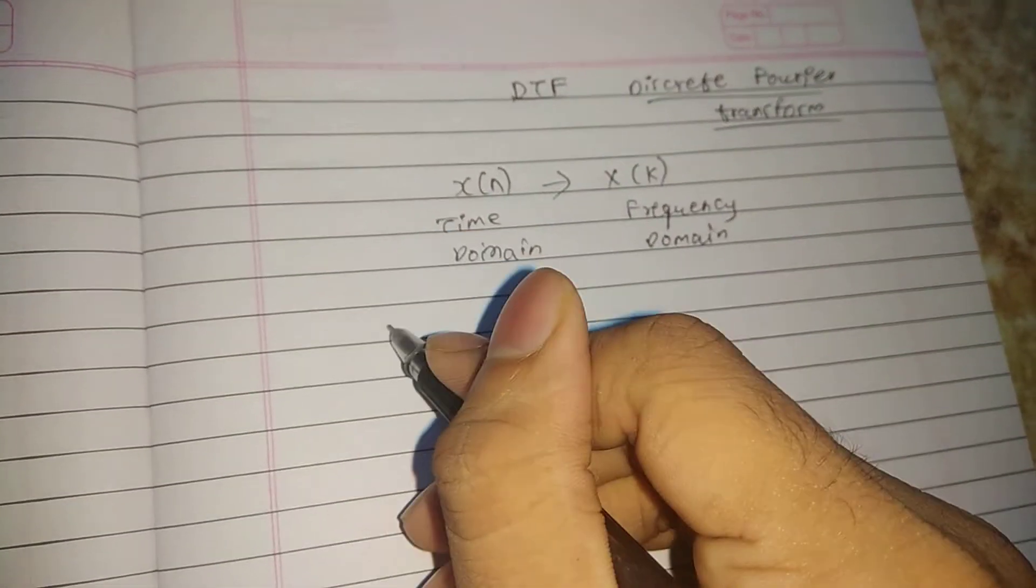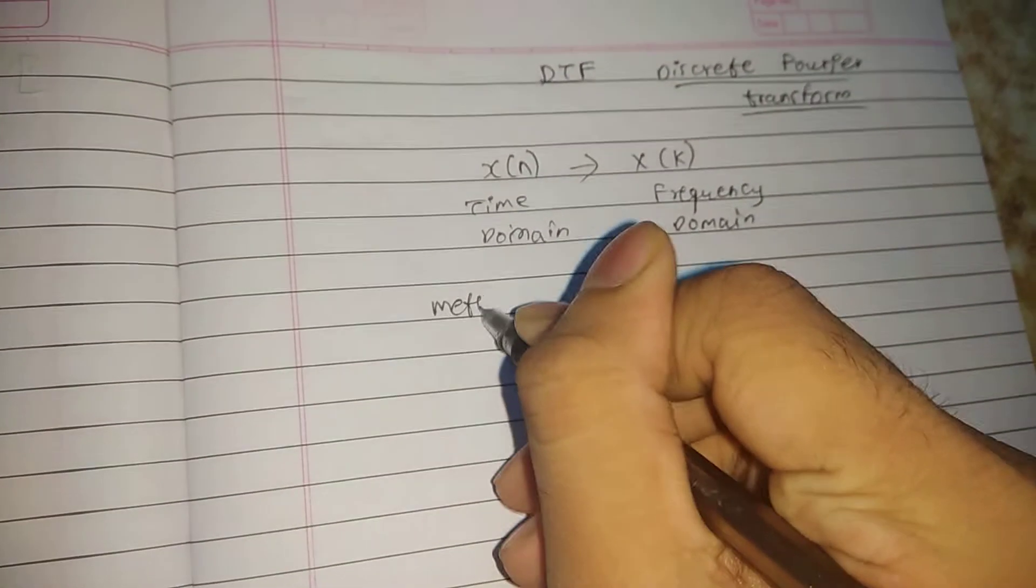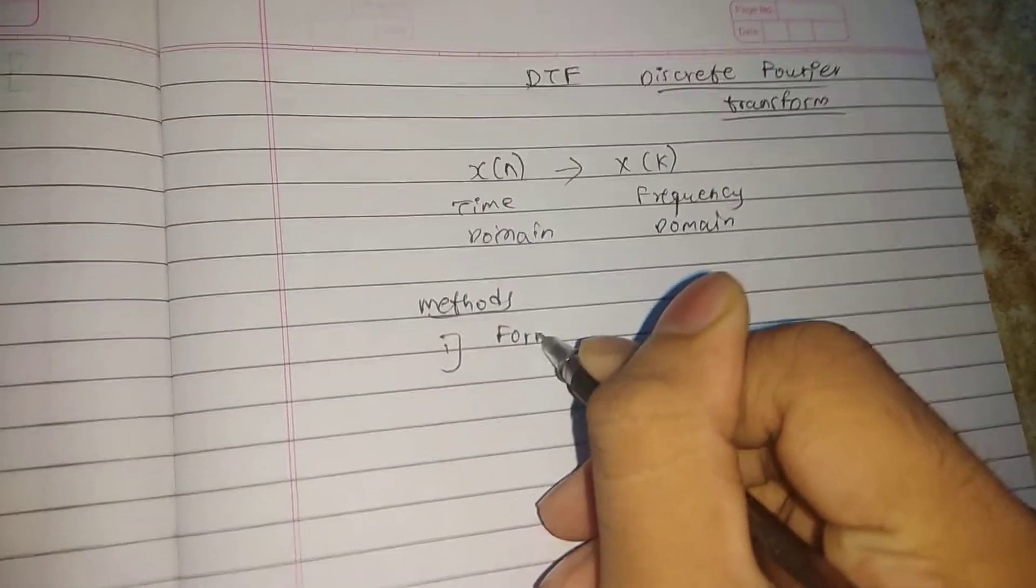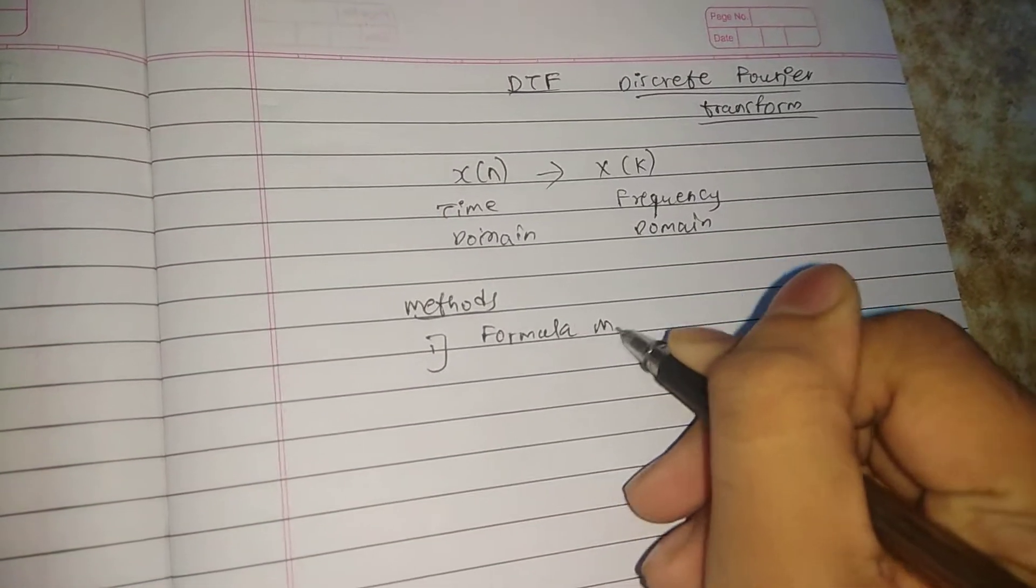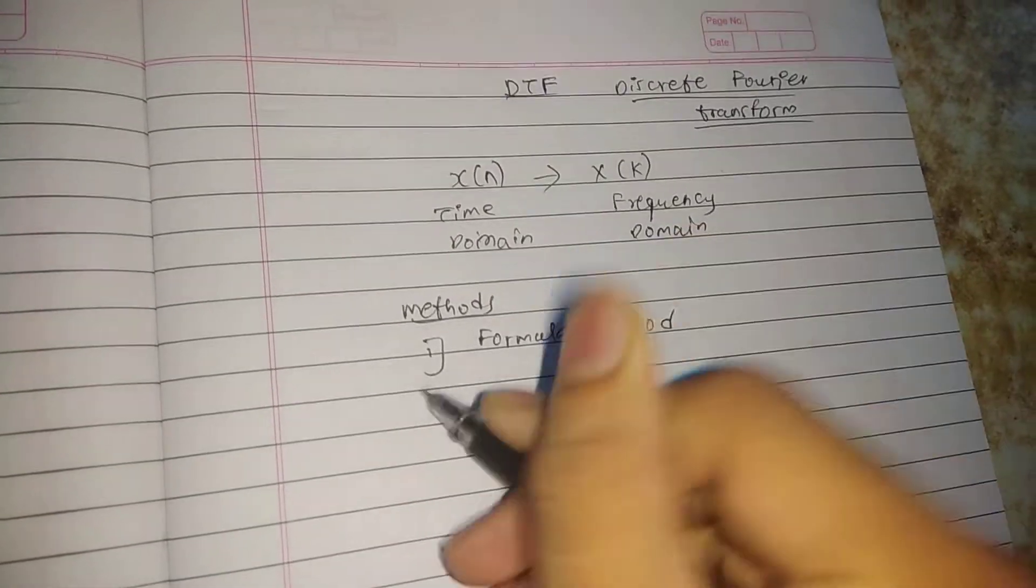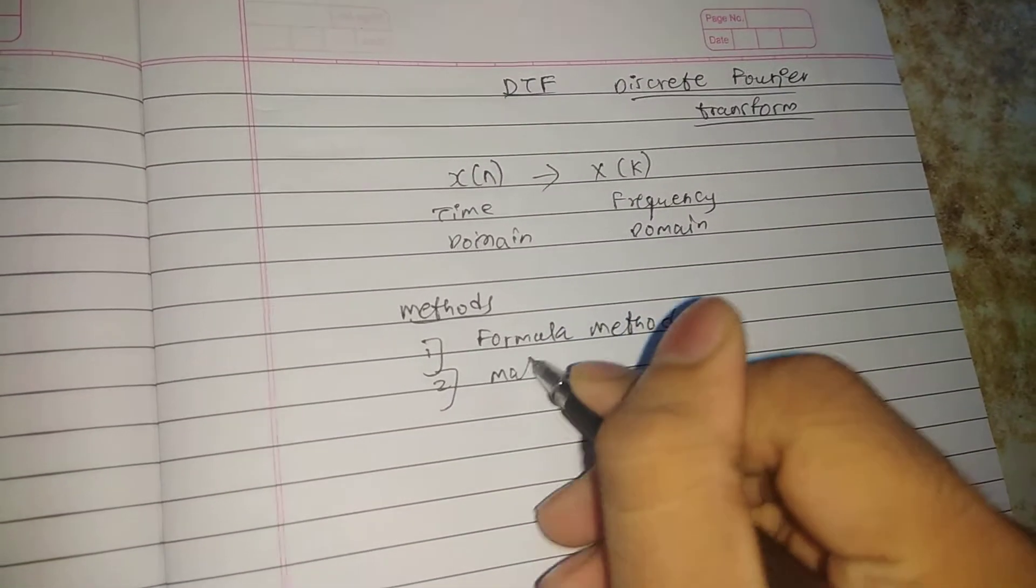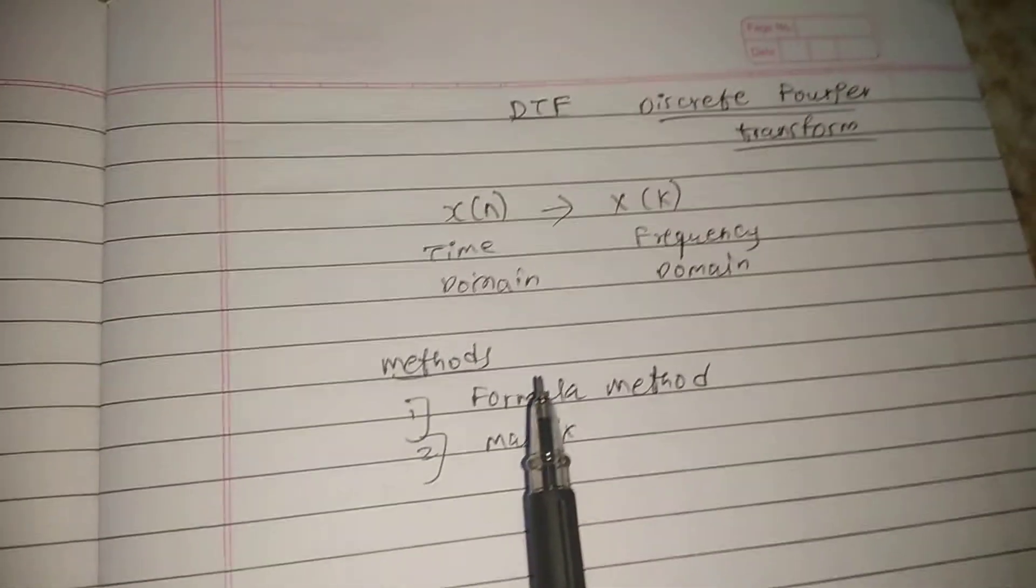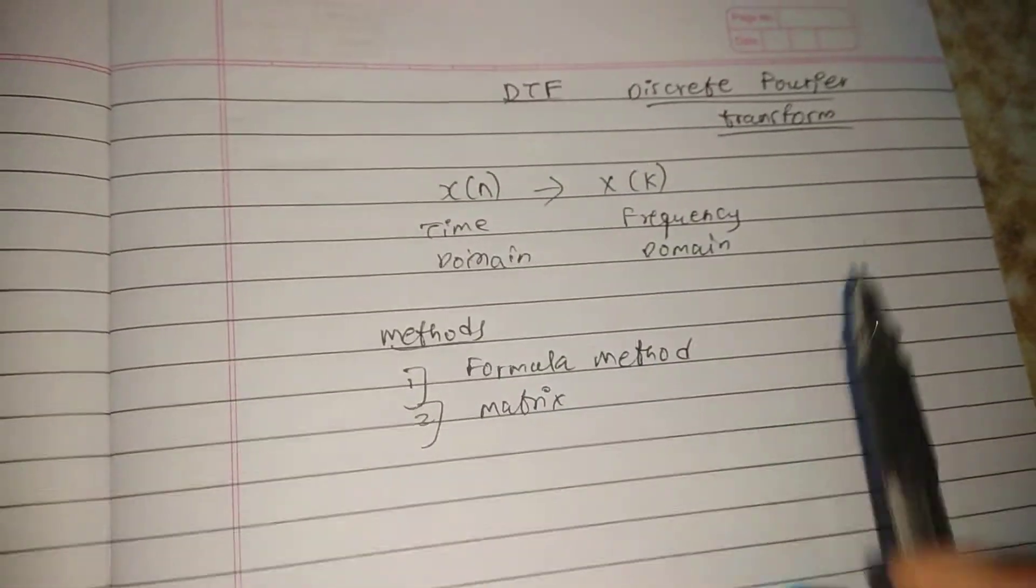You have two methods. First one is the formula method, and second is the matrix method. These are the two methods by which you can calculate the Discrete Fourier Transform.